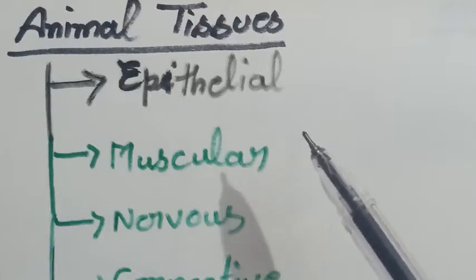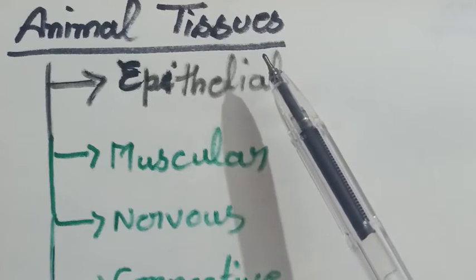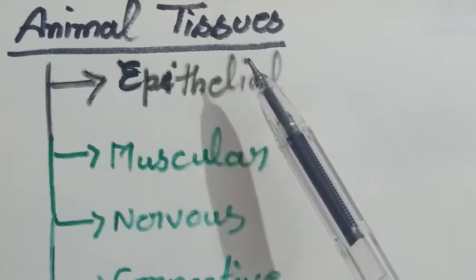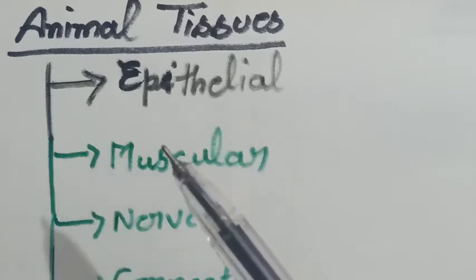Hello student, in this video I am going to explain about the next topic that is animal tissues. As we learn about plant tissues, so the next topic of the same chapter is animal tissues.